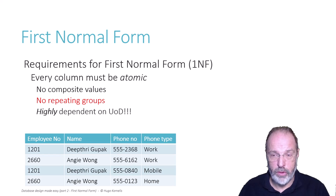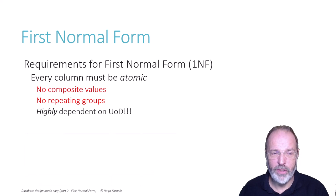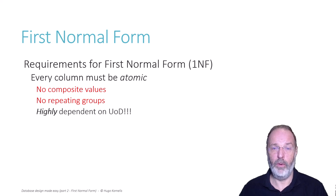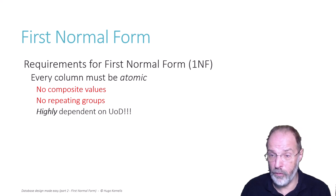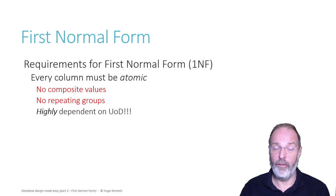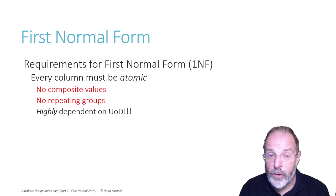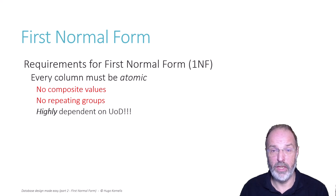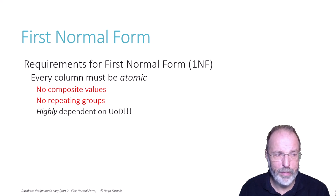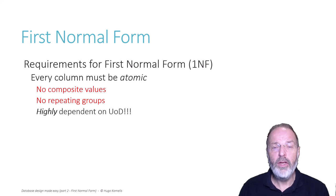So those requirements — no composite values and no repeating groups — are both highly dependent on the universe of discourse, which incidentally makes this part of normalization, the verification of the first 1NF requirement, the hardest part of normalization. Not because the rule is hard to understand, but because it is so dependent on the universe of discourse — you have to think all the time.